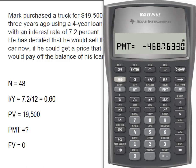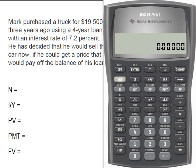Now, using this payment amount, we're going to figure out what the current present value, or outstanding balance of that loan is. He's going to sell the car now, and what we know is he bought it three years ago with a 4-year loan, so he has 12 payments left. We took that 7.2% interest rate and divided it by 12 to give him a monthly interest rate of 0.60.